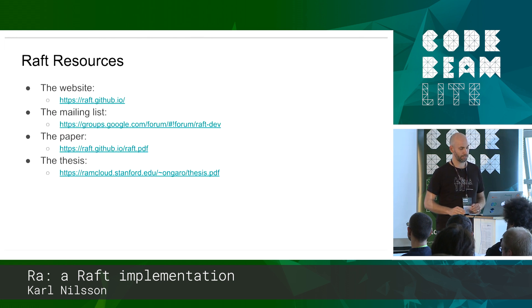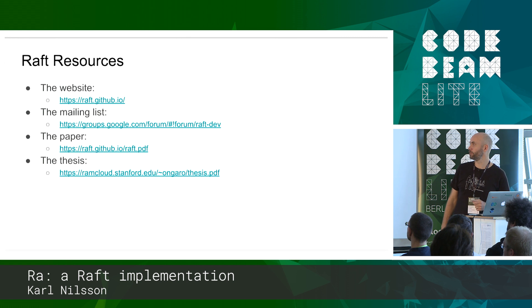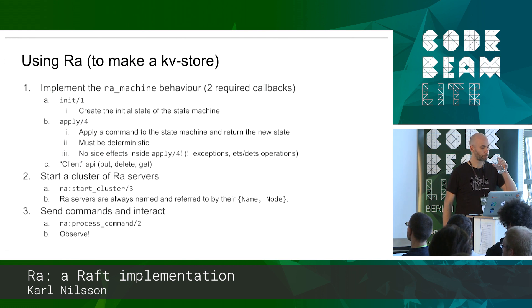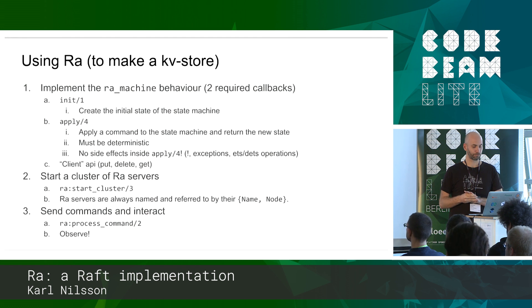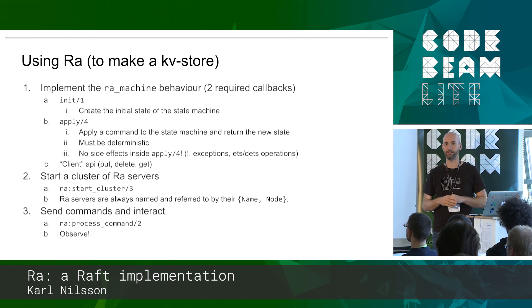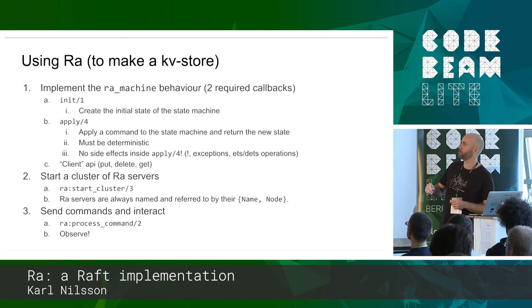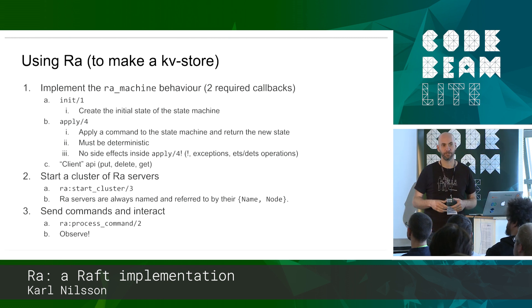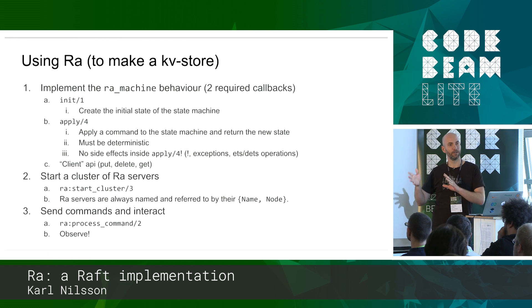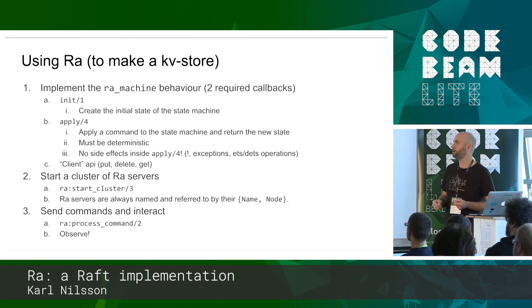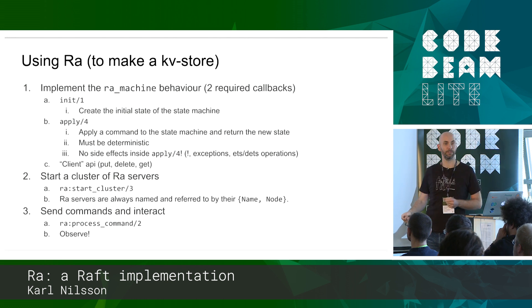Using Ra to make a key-value store - that's the hello world of distributed replicated state machines. You have to first implement a behavior, because that's how we run in Erlang. The Ra machine behavior has two required callbacks: init of one, which takes a configuration and returns the initial state of the state machine, and apply, which has a couple of extra arguments but does the same thing - it applies a command to the state machine and returns a new updated state.